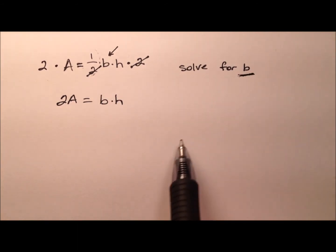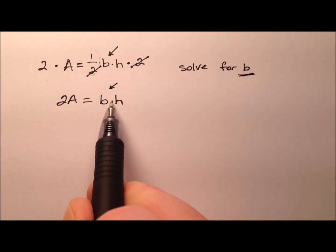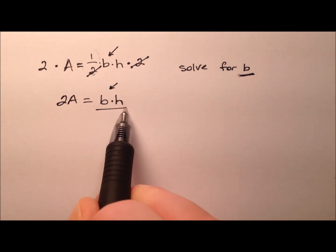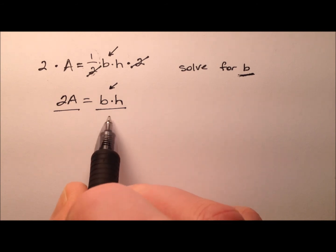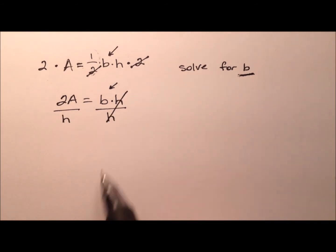To finish solving for b, I see that it's being multiplied by h. So once again, let's do the inverse operation of multiplication and divide both sides by h. Those h's will cancel.